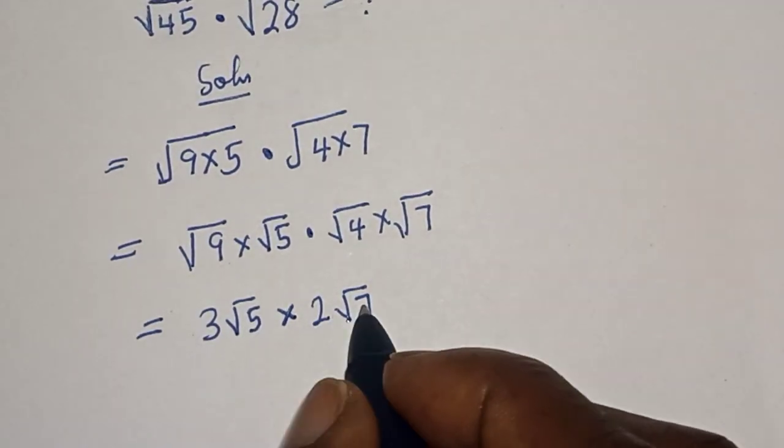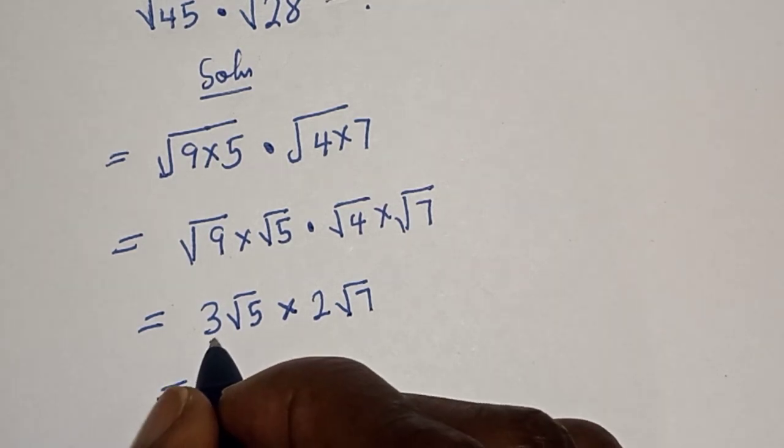Then, we have root 5 and root 7. This is equal to 3 times 2, 6.